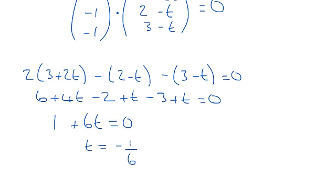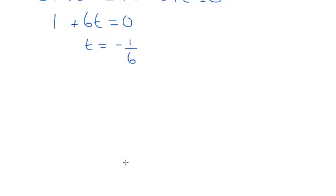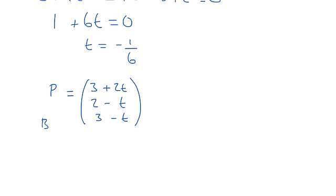And when we put that in here, so if I just take that and put that down here, just get rid of that B that's in the way. So P is going to be, with T equals negative 1 sixth, so 3 minus 2 sixths which is 1 third, 2 plus 1 sixth, and 3 plus 1 sixth.